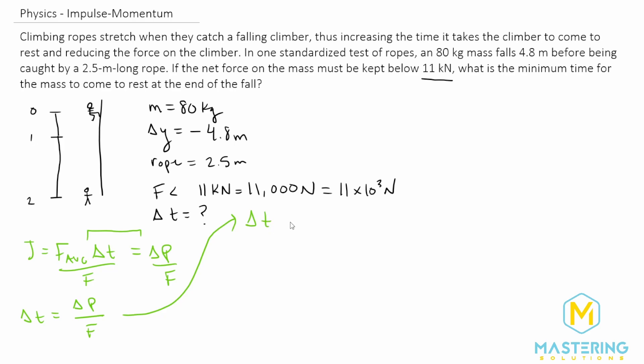We can simplify that a little bit more. Delta t is equal to p final minus p initial divided by force average. Now let's keep going. Delta t is equal to mv final minus mv initial all over the average force. If we look at this, the final velocity of the person is actually zero, so this will go away.